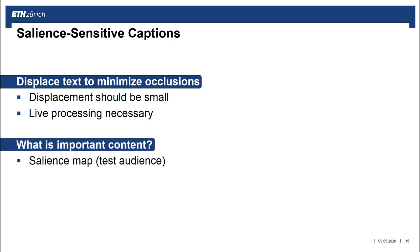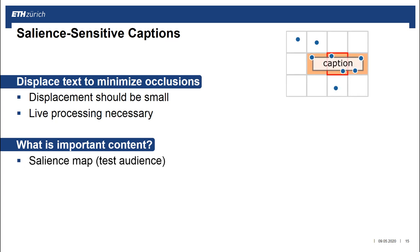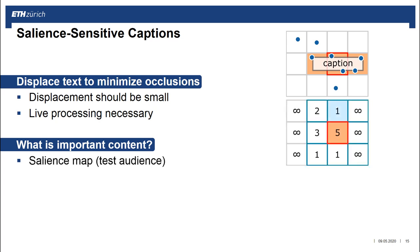To determine important regions, we recorded a salience map based on a test audience watching the videos with audio. Our salient-sensitive algorithm works as follows: first, we divide the screen into cells and determine for each cell how many gaze points from the test audience would be occluded if we center a caption box there. This way we can create a cost matrix and finally a displacement map, that we can use as a lookup for where to place captions with less occlusions.